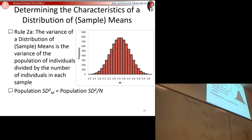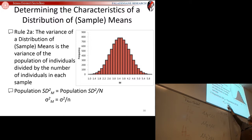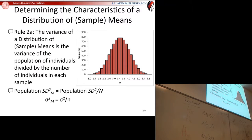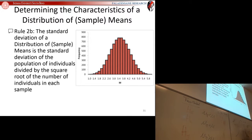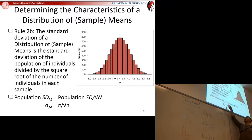If our population of individuals has a mean of 40, our distribution of sample means also has a mean of 40—that's because your sample will typically be a good estimator of your population mean. The big one to pay particular attention to is the variance and standard deviation of your distribution of sample means. That does not equal your population variance. The variance of the distribution of sample means equals your population variance divided by the size of your sample.